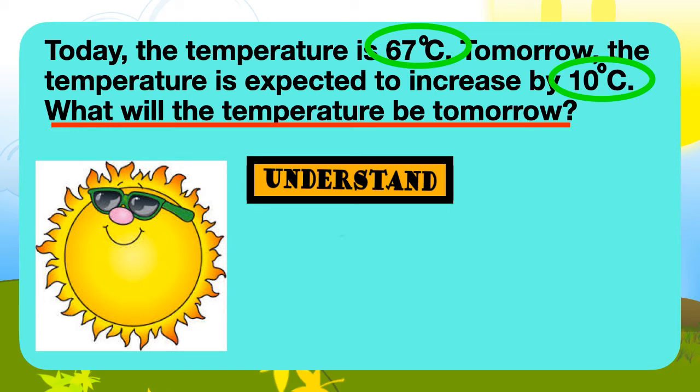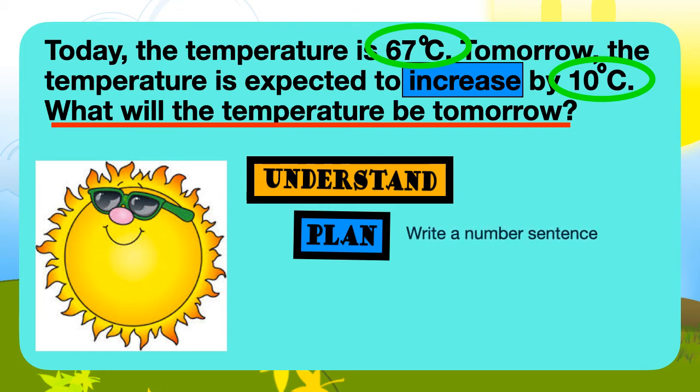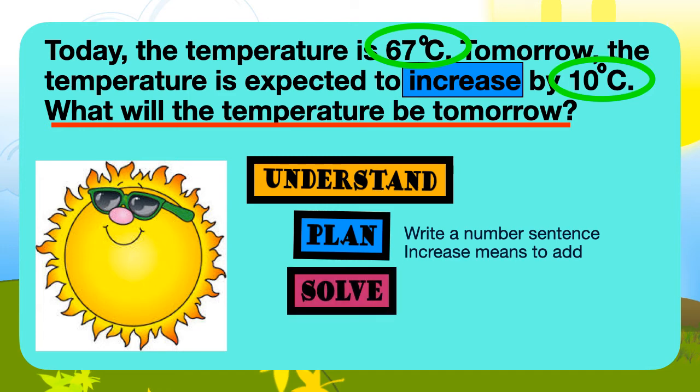Now that we've done that, it's time to plan. In planning, the keyword in this word problem is the word increase. Therefore, we're going to use the strategy, write a number sentence. The word increase tells us that we must add. Now, we can solve our problem.